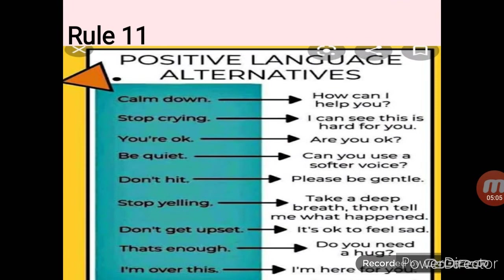Rule number eleven — which is the most important — is: use positive language alternatives. You must follow a positive attitude, a good way of talking. You should speak very politely and in positive language. For example, instead of saying 'calm down', say 'how can I help you?'